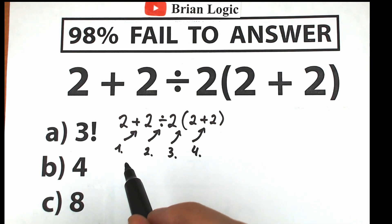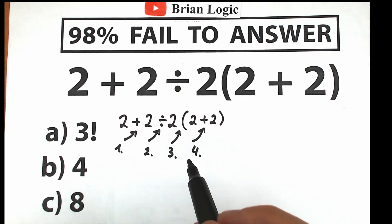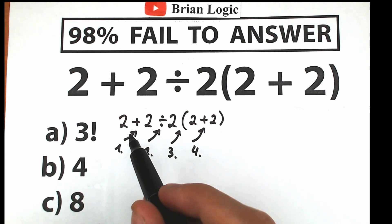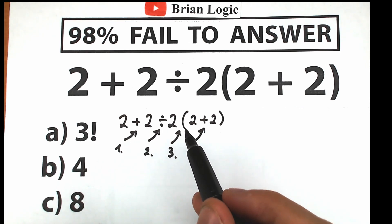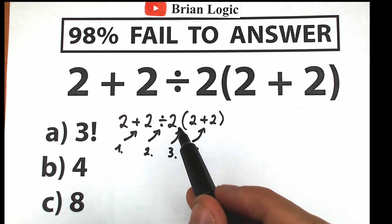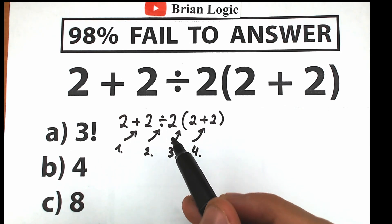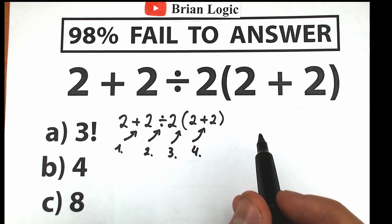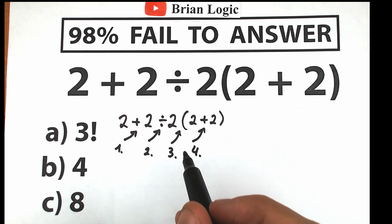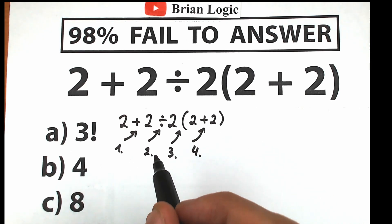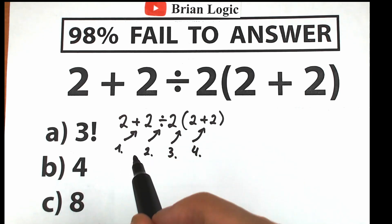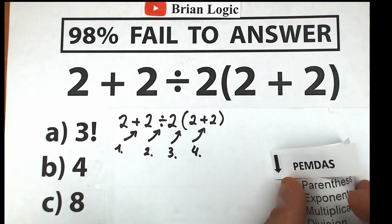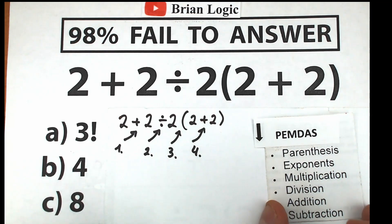We need to understand the correct order to solve this problem. In math, we can't solve these challenges randomly. If one student starts with addition then division then multiplication, and another starts with multiplication then division, you get different answers — randomly ordering operations is really bad.